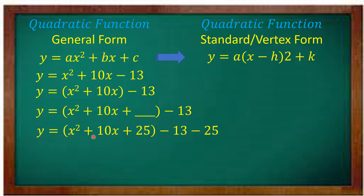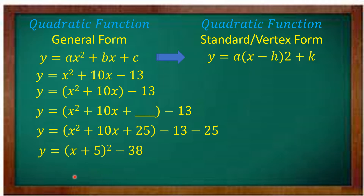Since we need to add this to make it a perfect square trinomial, we subtract the opposite sign here. Since it is positive, you have to subtract 25 here. Now since this is a PST, we can factor it into the square of a binomial. The square of binomial: get the square root of x squared — that's x; square root of 25 — that's 5; then copy the sign of the middle term, which is positive. So it becomes the quantity of x plus 5, squared.